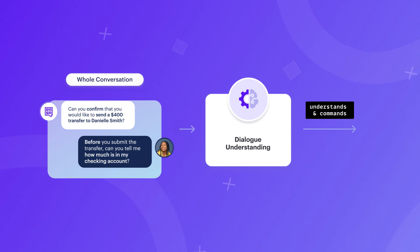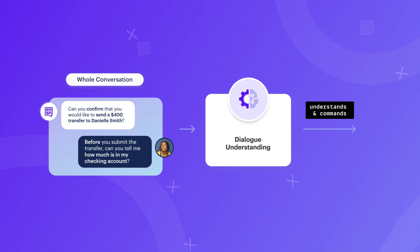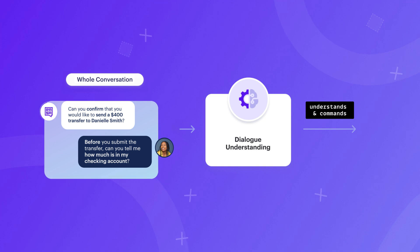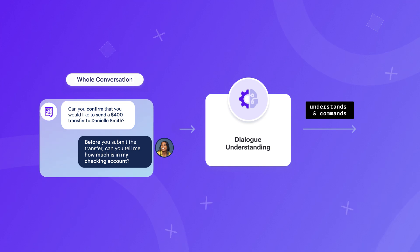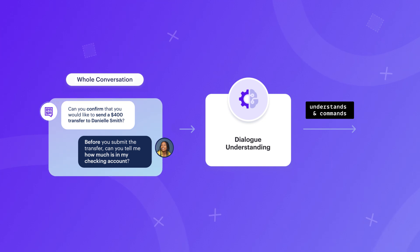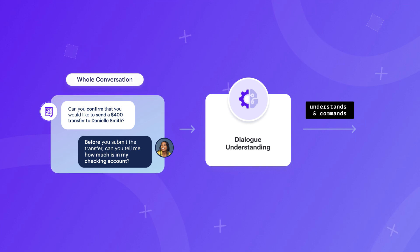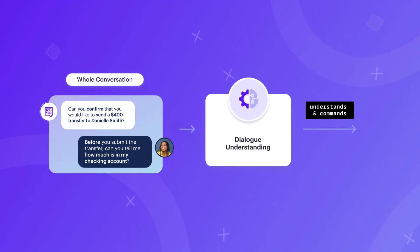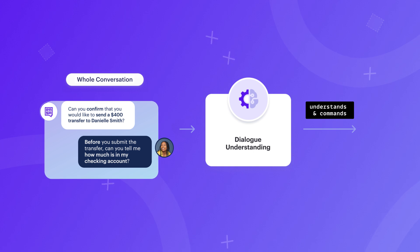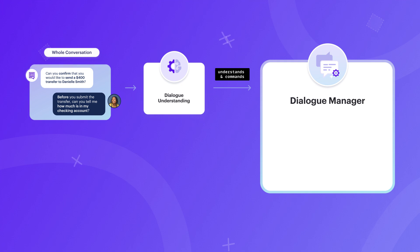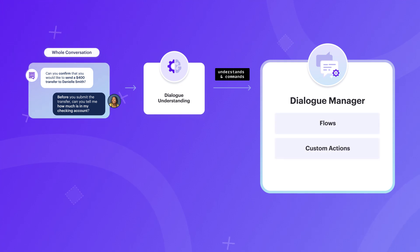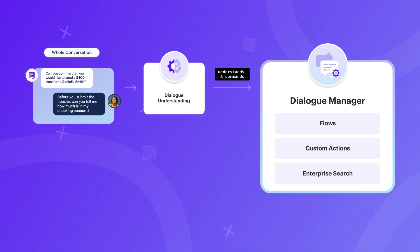Remember, assistants built with Calm aim to efficiently fulfill user requests. That's why an assistant considers user inputs and what happened in the conversation so far to make sure that the follow-up is natural and that it brings the user closer to achieving their goal. After creating the sequence of commands, a dialogue manager is responsible for executing the produced commands.